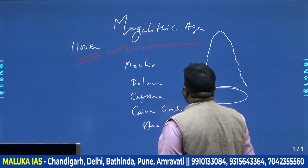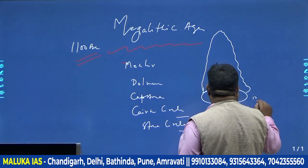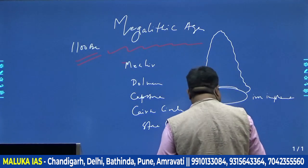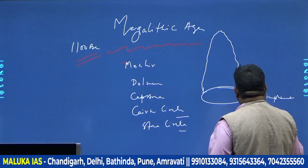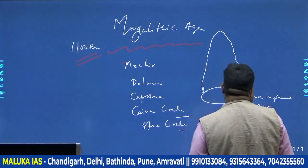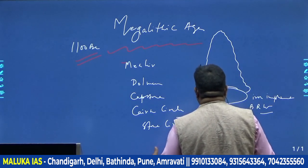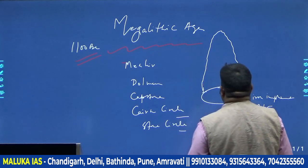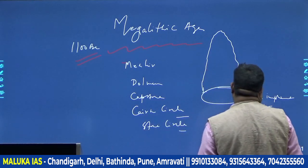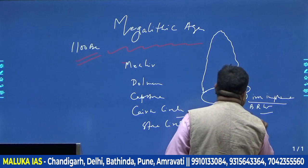Within the burial, different sorts of things are found, like iron implements. There are some common features — black and red ware, for instance. From all these megalithic sites you will find iron implements and black and red ware. These people believed in the concept of the next life, which is perhaps why the idea of a stupa is derived from megalithic people in India.